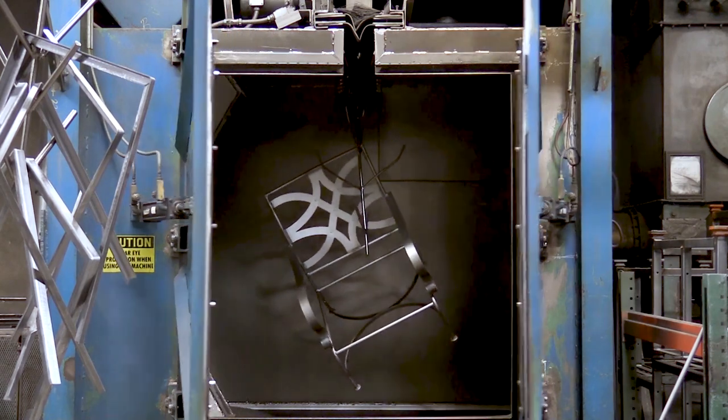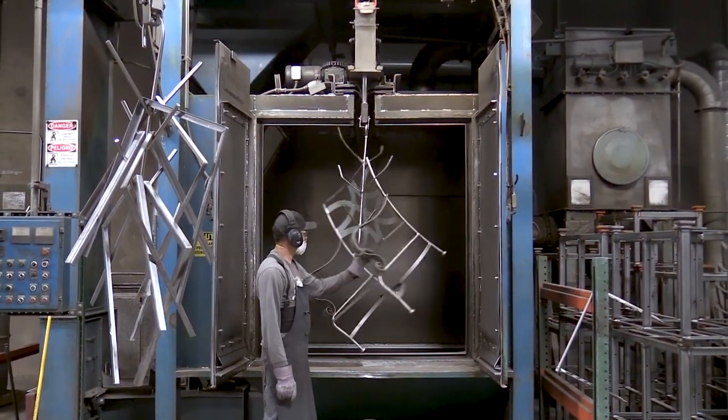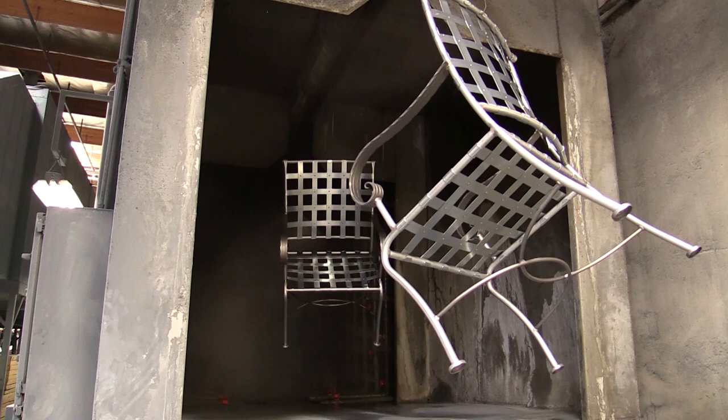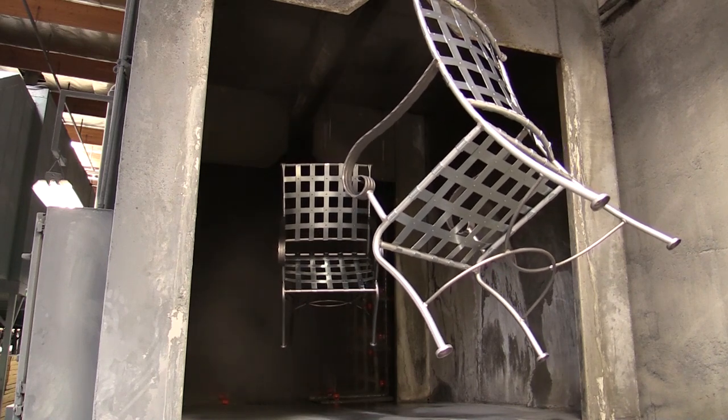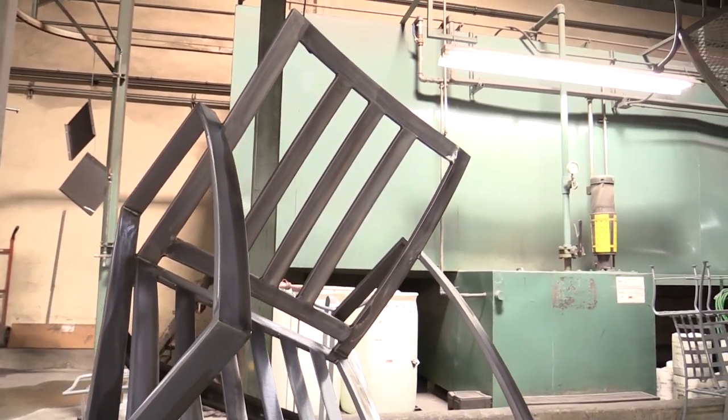The completed frames are blasted with tiny steel particles to remove dirt and oil from the manufacturing process and then washed in a five-step process that transforms the surface of the metal to an optimal blue metal state, leaving the frame perfectly clean and ready to receive the primer coat.